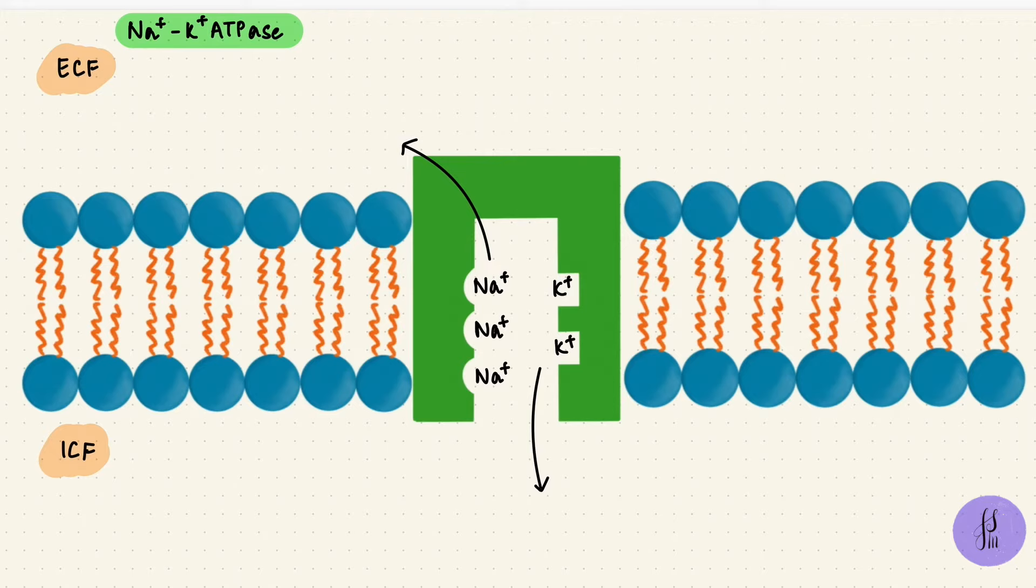Inside the cell, normally potassium is higher. Outside, sodium is higher. So if this were diffusion, sodium would enter and potassium would leave. But here we're talking about active transport. It's against the gradient, so sodium leaves and potassium enters. Three sodium and two potassium, so it's got a coupling ratio of three to two.